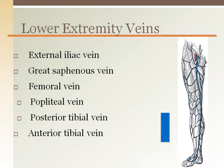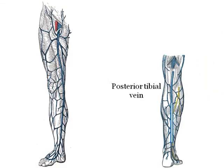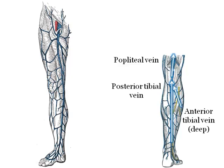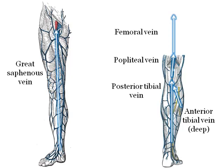Blood returning to the heart travels through the posterior and anterior tibial veins to become the popliteal vein behind the knee. The popliteal vein becomes the femoral vein deep in the thigh. The great saphenous vein is the primary superficial vein of the leg, draining into the femoral vein before it enters the torso and becomes the external iliac vein. Notably, in some coronary surgical procedures, segments of the great saphenous vein have been cut out and used for coronary bypass grafts.